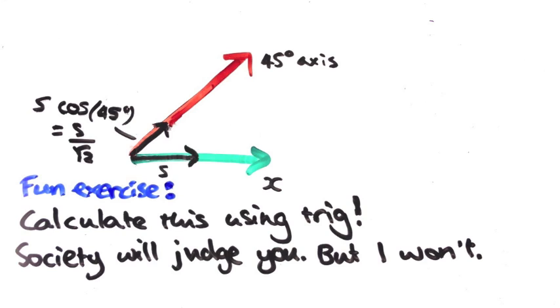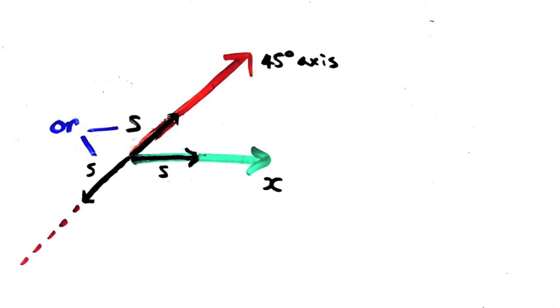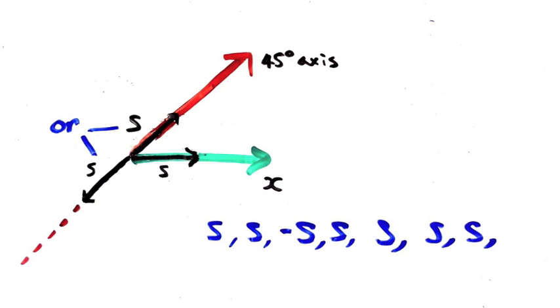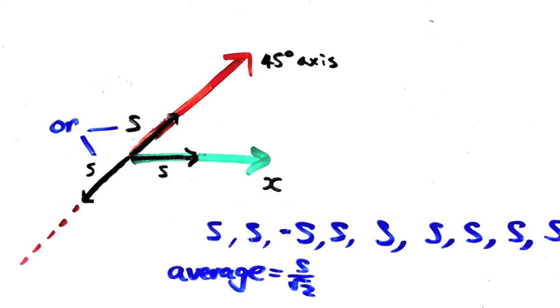Again, every single time we repeat this experiment, the electron will have spin of strength s, but this time it will be slightly more likely to have it in the positive direction than the negative, so that when we take the average of all the results, we get s on root 2.